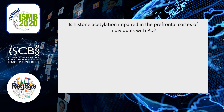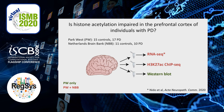Given strong evidence for complex I deficiency in PD and its link to histone acetylation, we wondered whether histone acetylation is indeed impaired in PD. For this purpose, we studied prefrontal cortex samples from two independent cohorts of subjects, looking at histone acetylation both using immunoblot and ChIP-seq approaches, and we also had RNA-seq data from the same individuals.